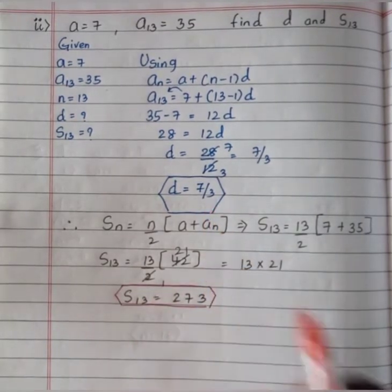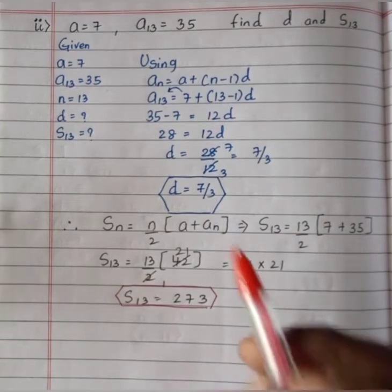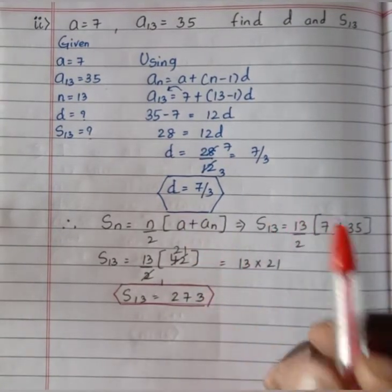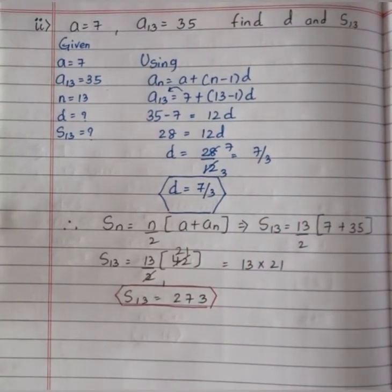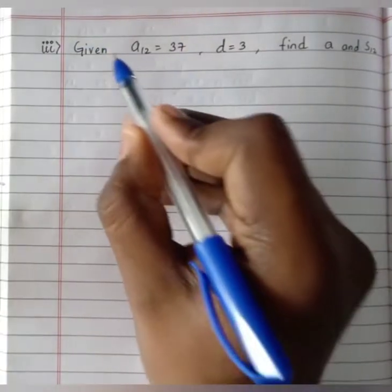We got d as 7 by 3 and S13 as 273. Now moving to the next question.